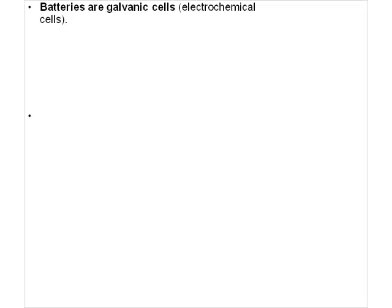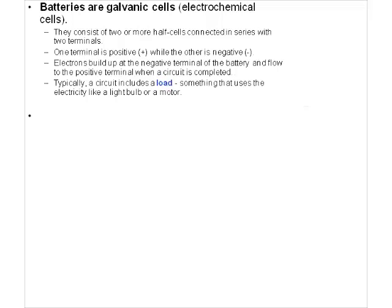The very first thing we're going to look at is the definition of a battery. A battery consists of galvanic cells — electrochemical cells — and in order to get a battery, you need two or more cells connected in series. An individual cell, like a zinc-copper galvanic cell, gives only 1.1 volts. To run a 6-volt flashlight, you'd need six of these connected in series.